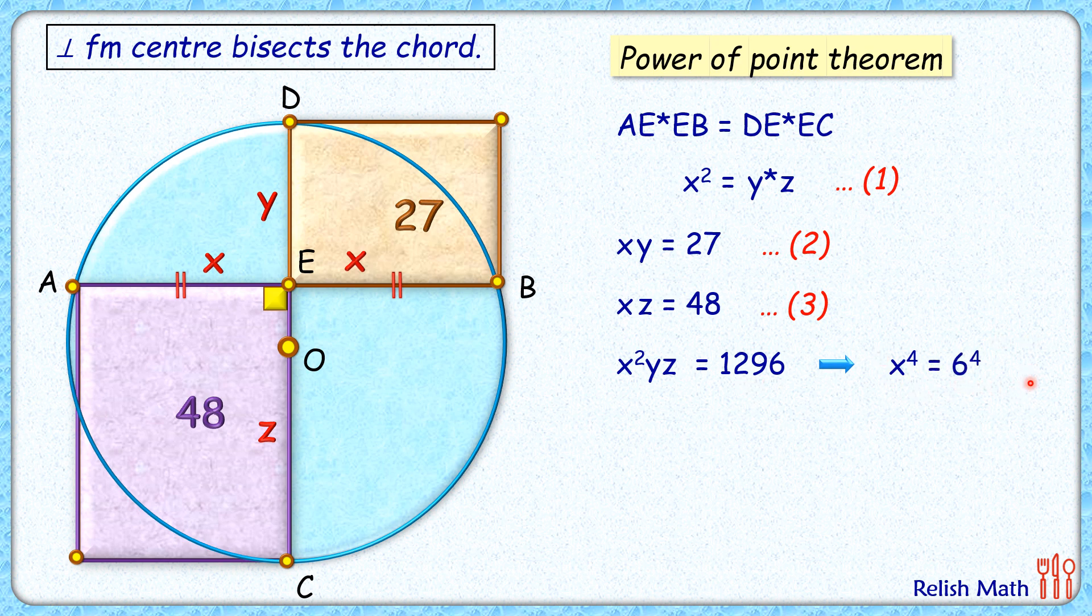So from here we are getting x as 6 centimeters. Putting this value of x in equation number two, we'll get y as 4.5 centimeters. And putting x equals 6 in equation number three, we'll get z as 8 centimeters.